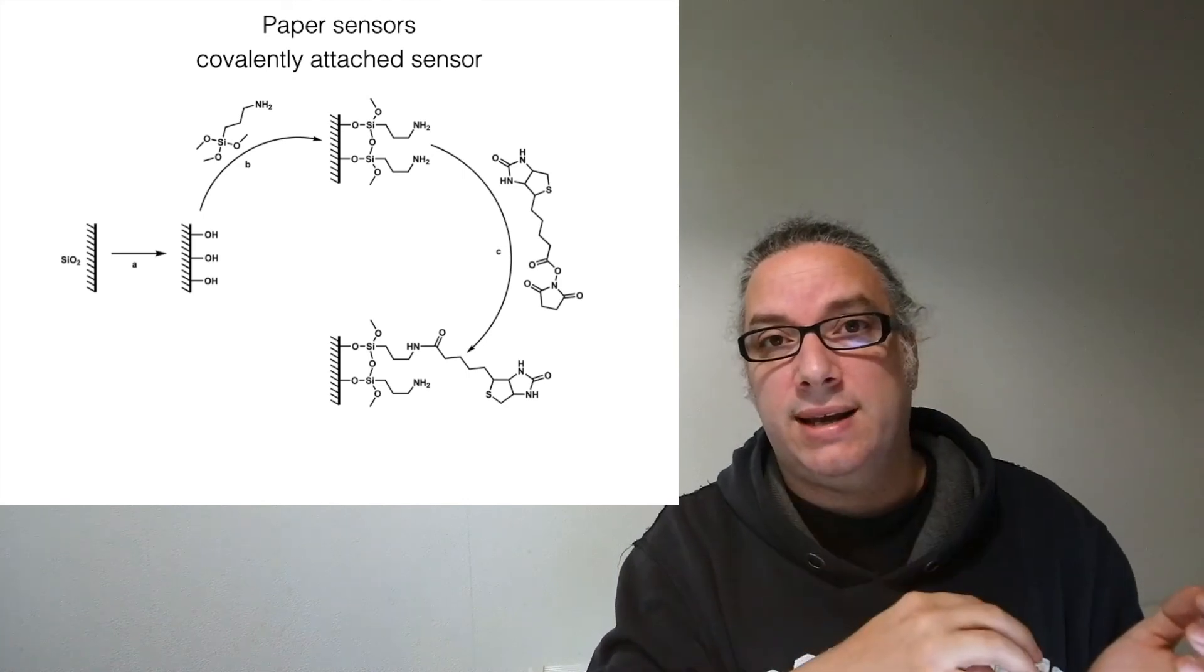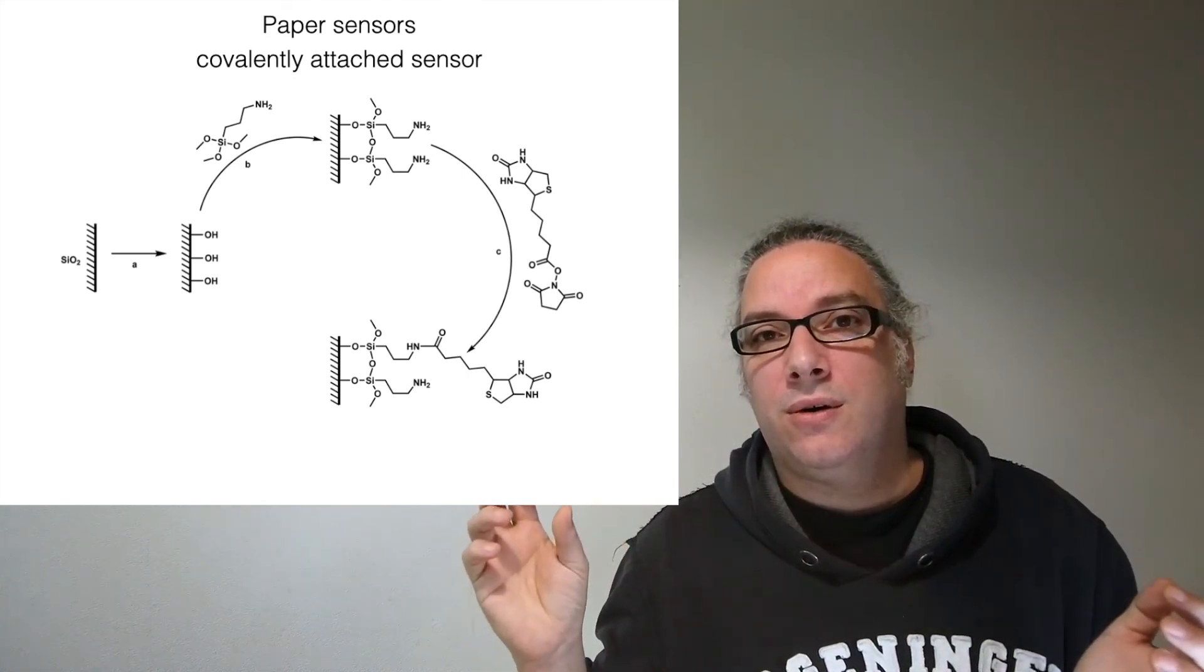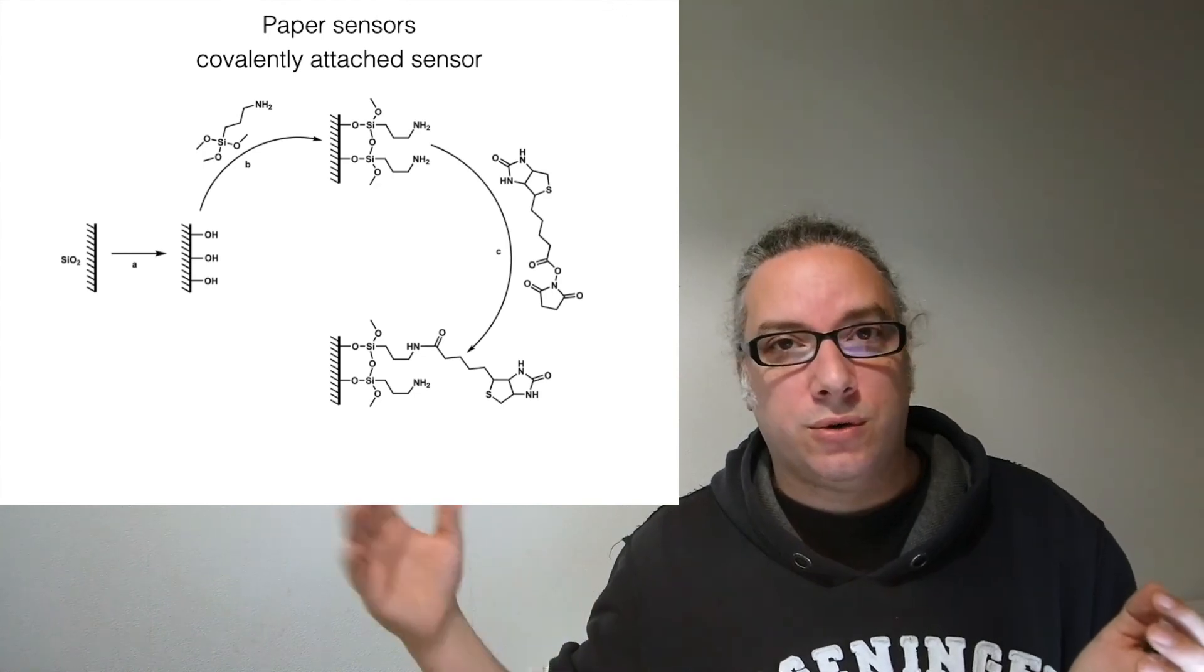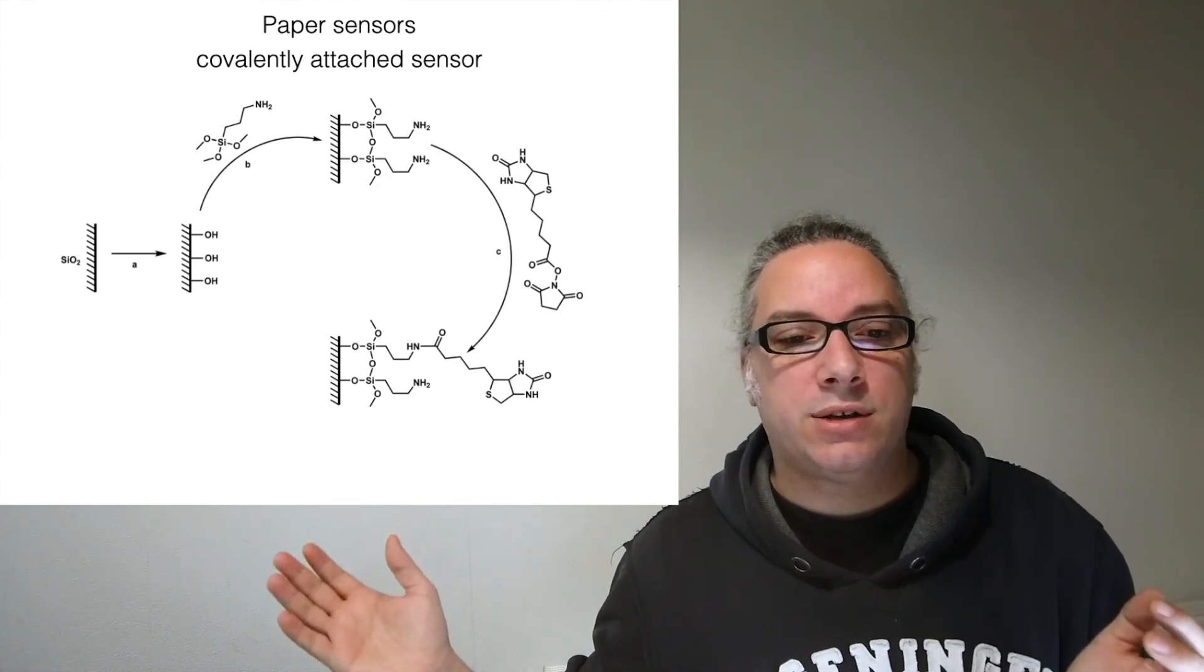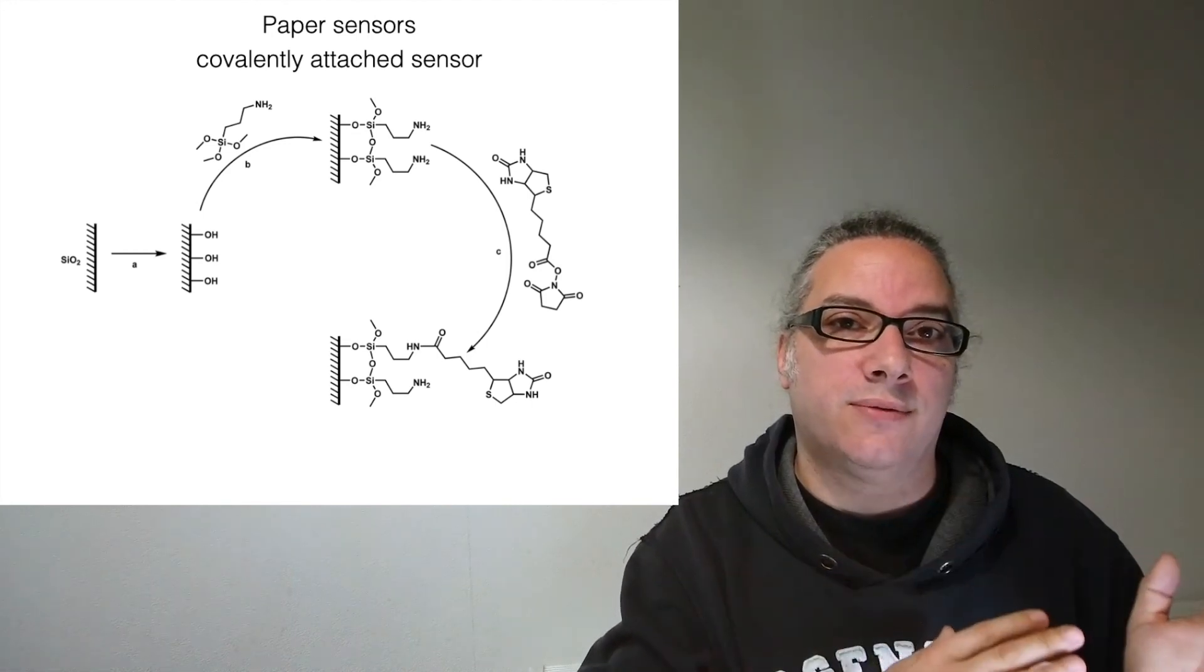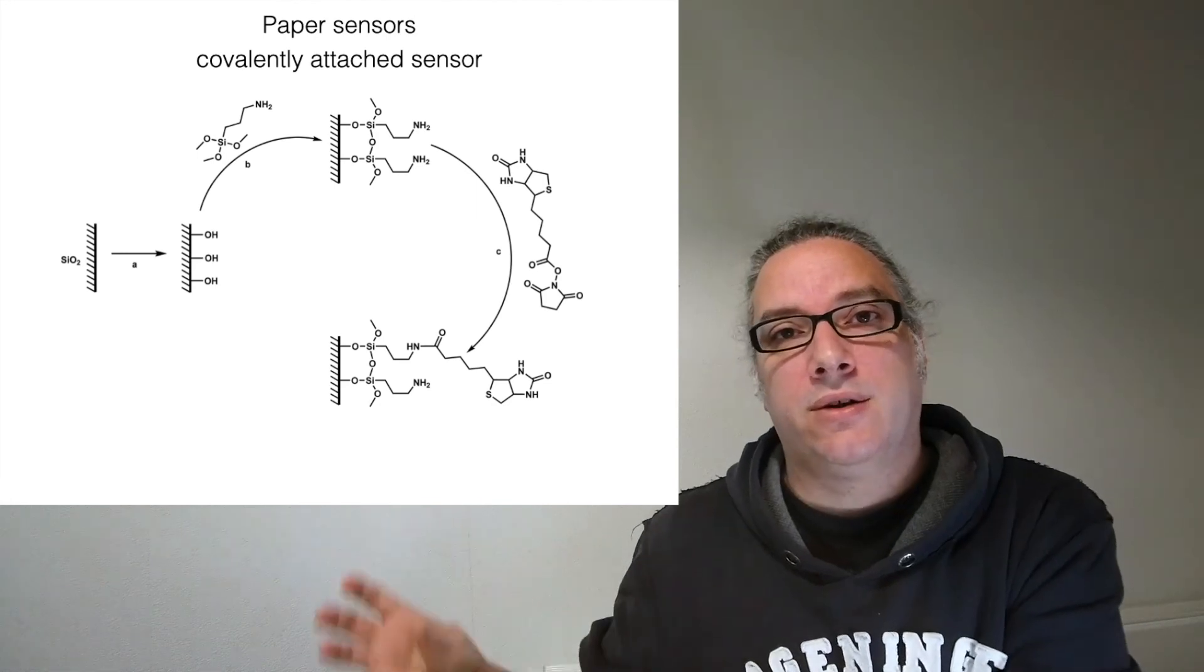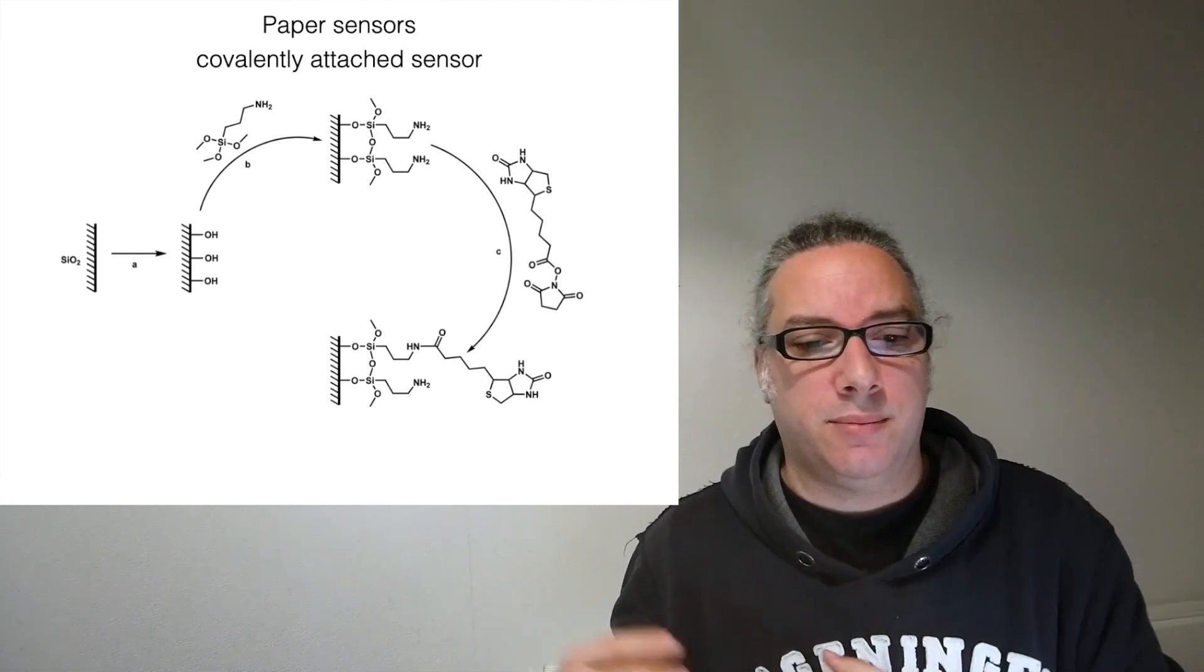So in this example you start from paper. You attach an aminosilane and then I'm using the amines for making another reaction that in this case is attaching a biotin.